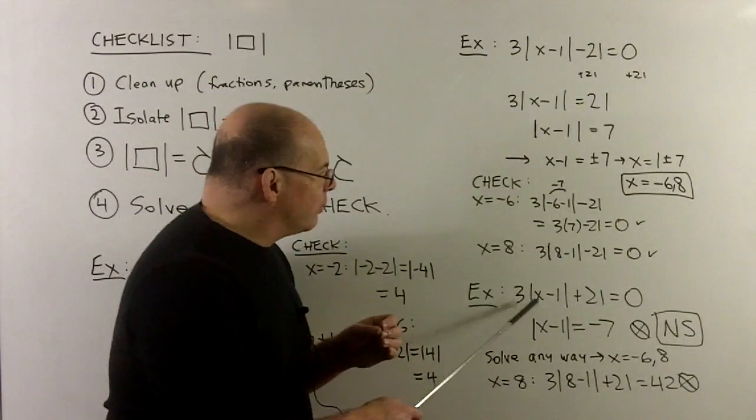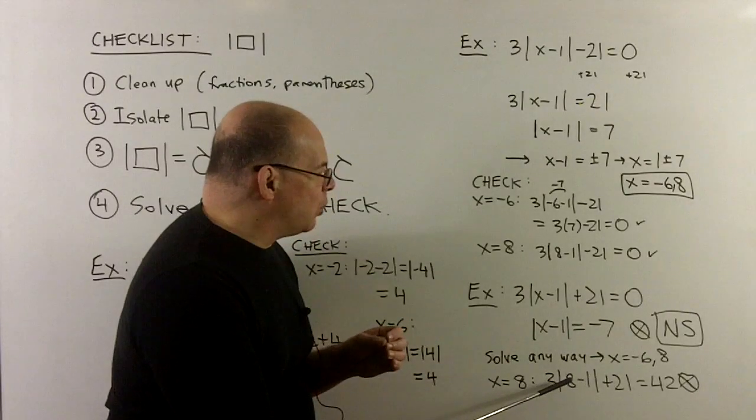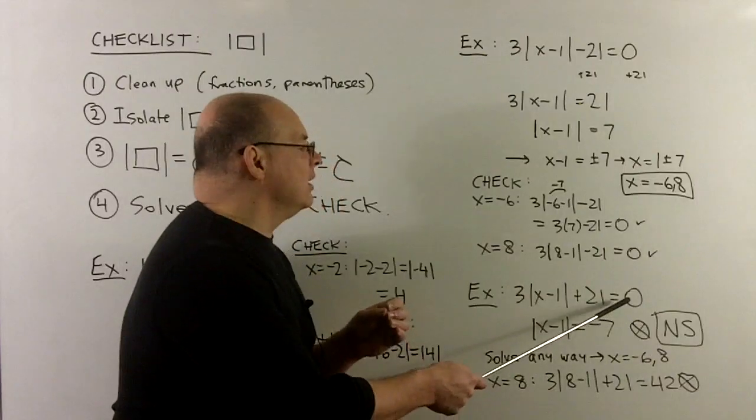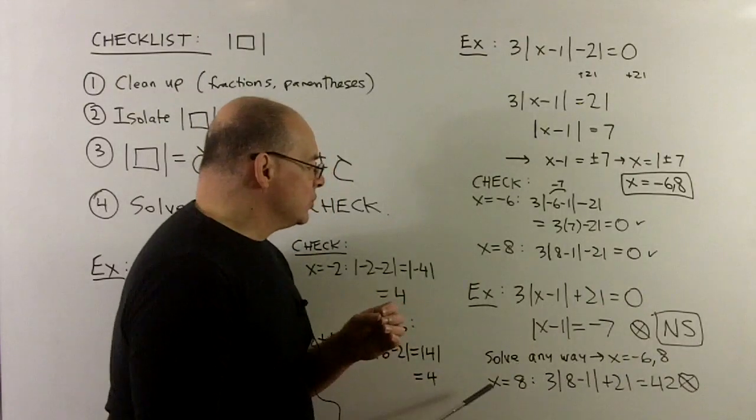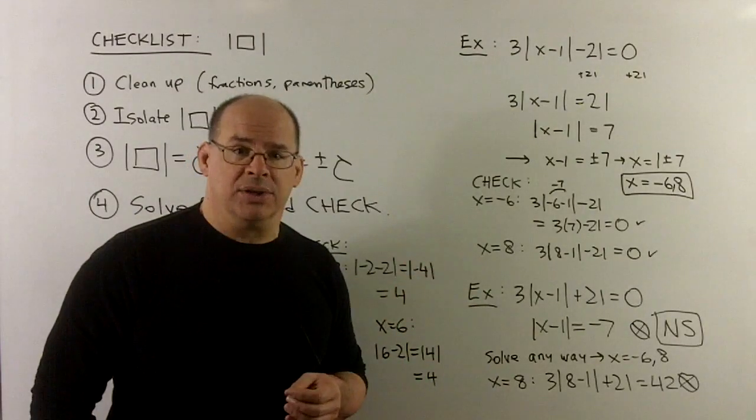Let's check the 8. If I put 8 into the original here, we have, it's going to be 3 times 7 is 21. Plus 21 gives me a 42. So we don't hit the 0 that we're looking for. So I'd have to throw away the 8. Likewise, if you try the minus 6, you'll need to throw that one away too.